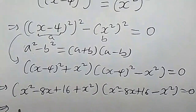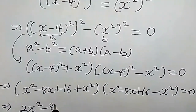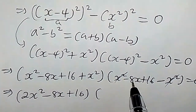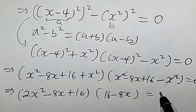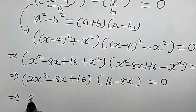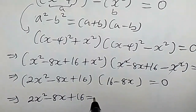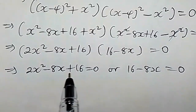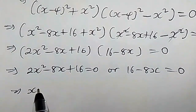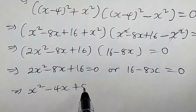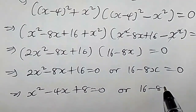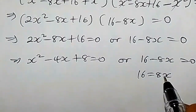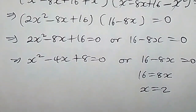This simplifies to (2x squared minus 8x plus 16) times (16 minus 8x) equals 0. So we have either 2x squared minus 8x plus 16 equals 0, or 16 minus 8x equals 0. Reducing the second equation gives x equals 2, which is one solution.